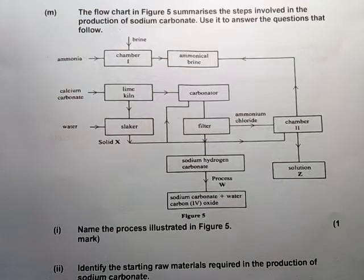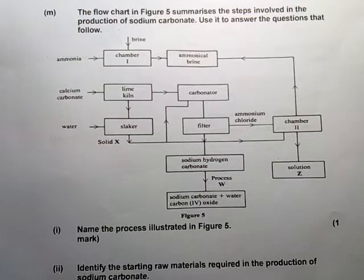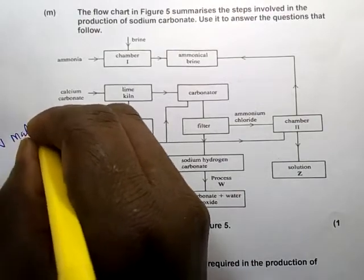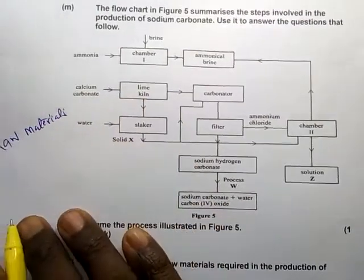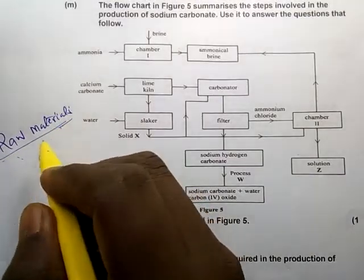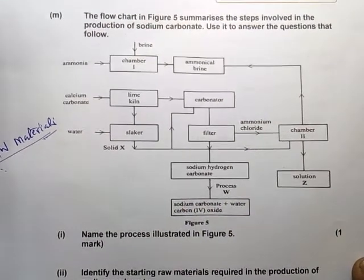Welcome once again. We want to look at the Solvay process. This is a question which can come in paper 2 or paper 1. We want to analyze the Solvay process using different flowcharts. To understand any process, there are basic things you must know: the raw materials, and if a catalyst is required, you must know the catalyst. For the Solvay process, we don't use a catalyst.